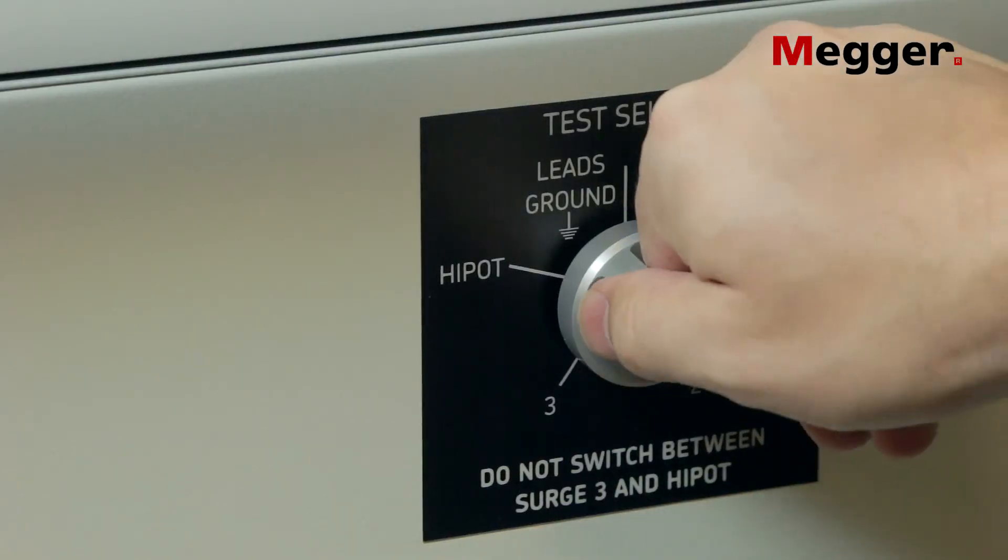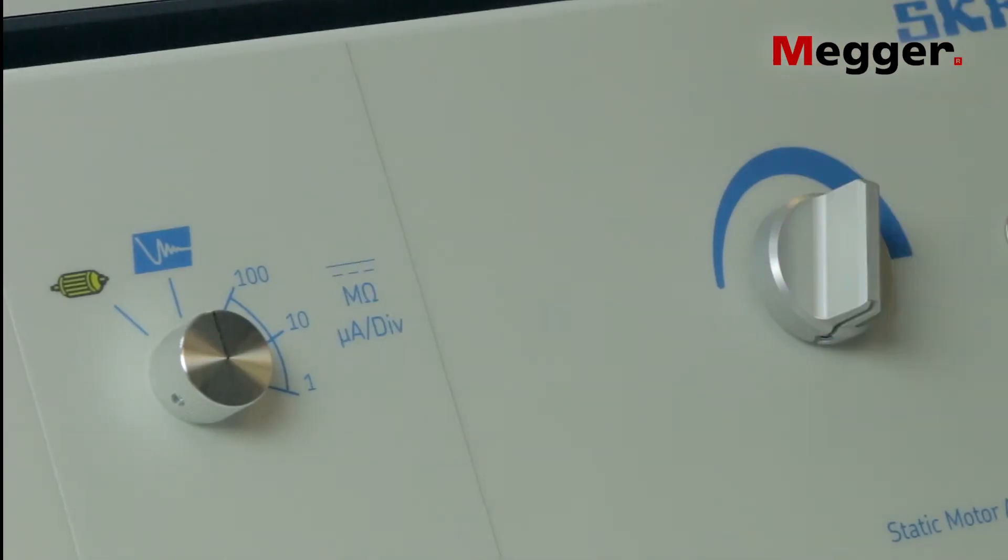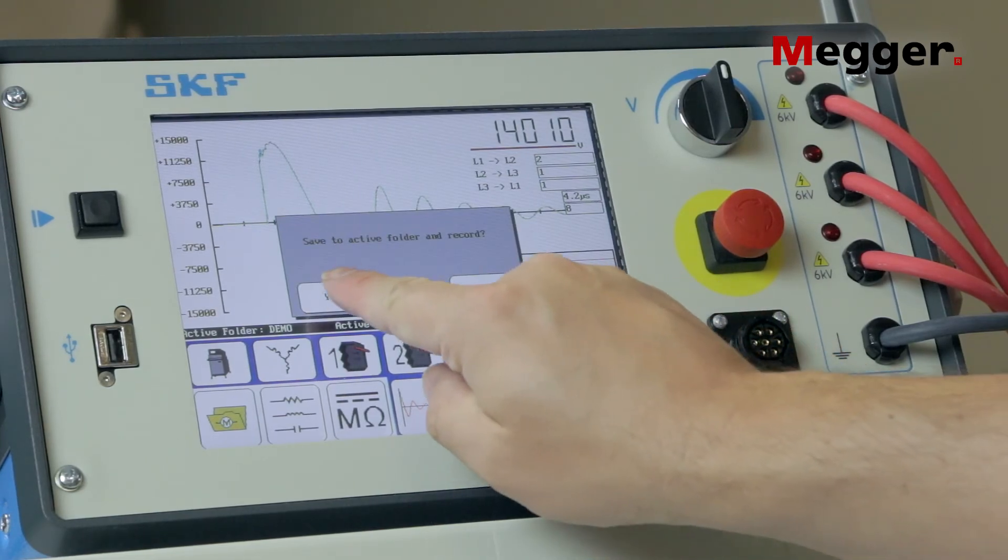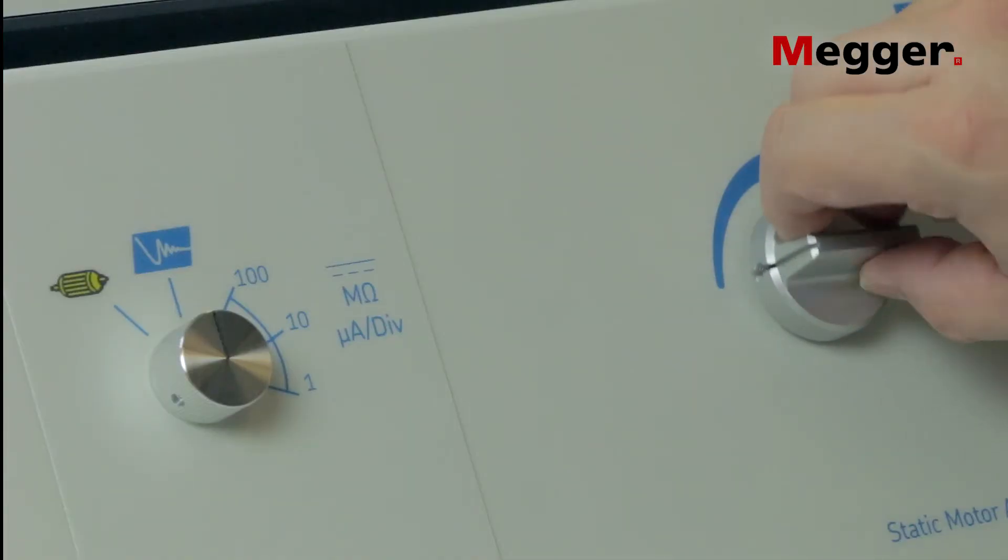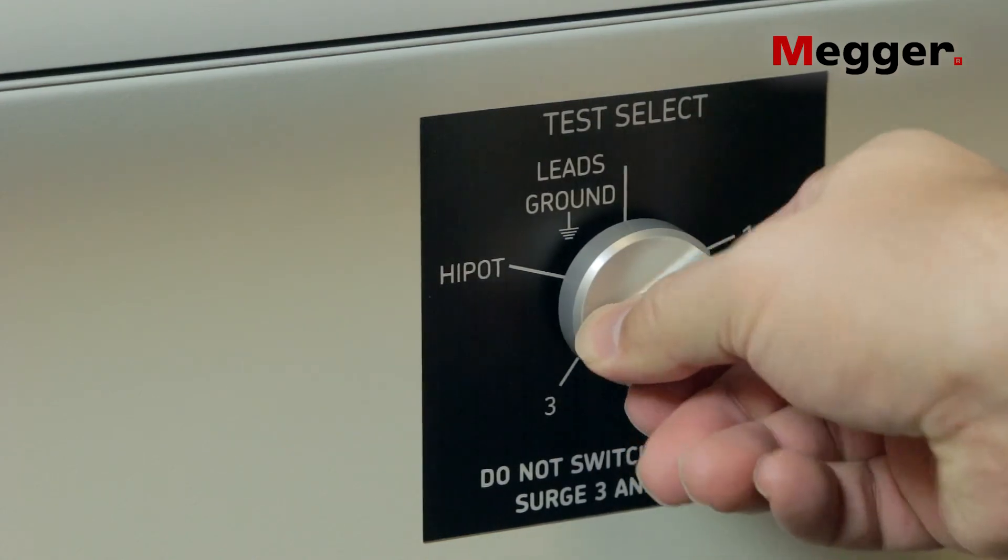Release the push-to-test button or foot switch. Repeat the procedure for lead three. Save the data. Turn the voltage control knob to zero and the power pack's test select switch to leads ground.